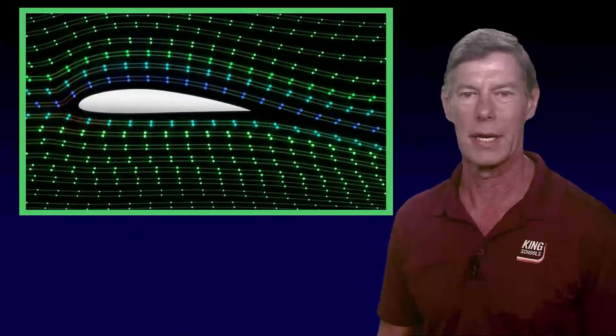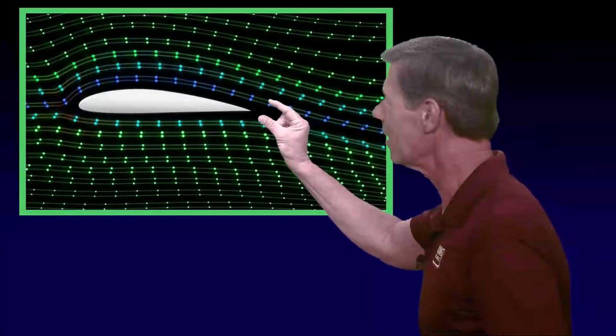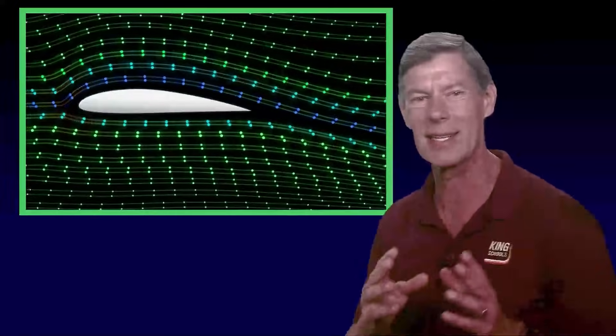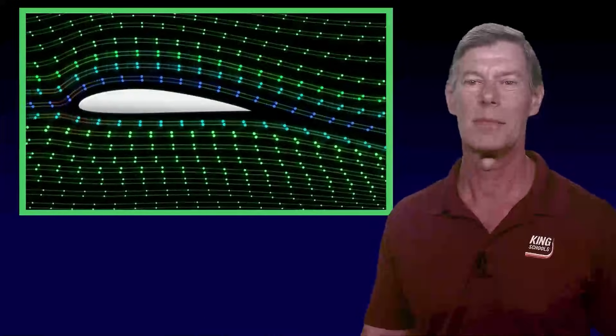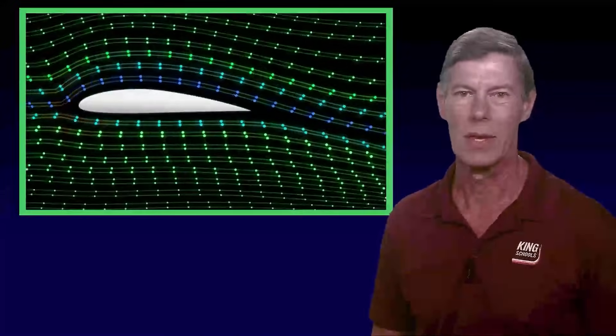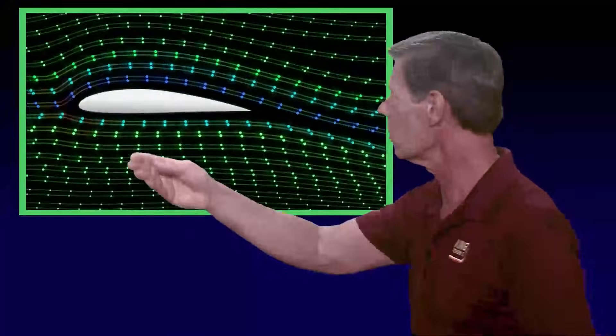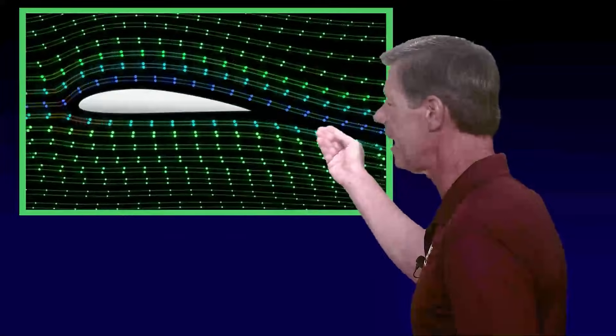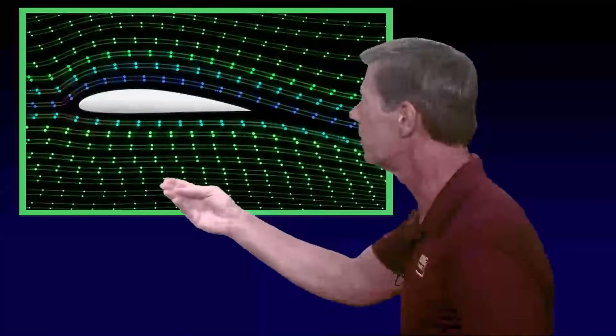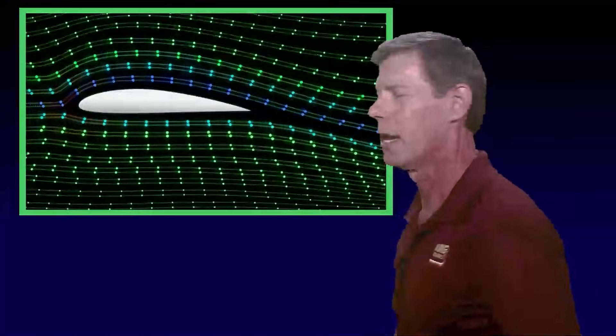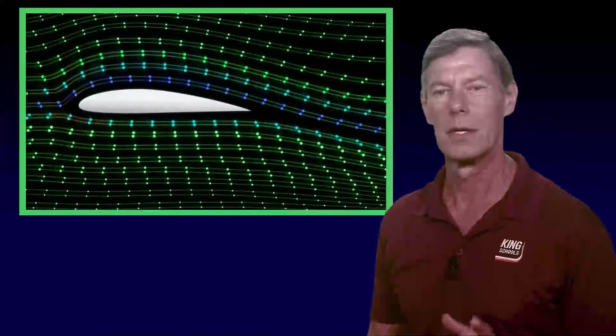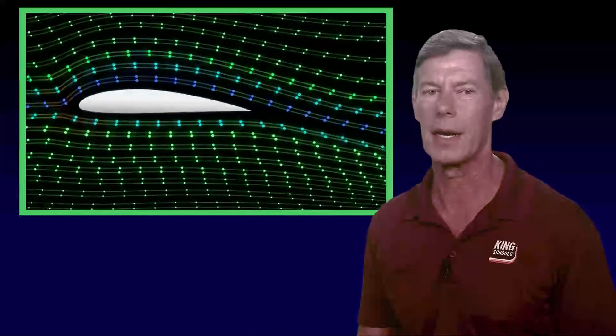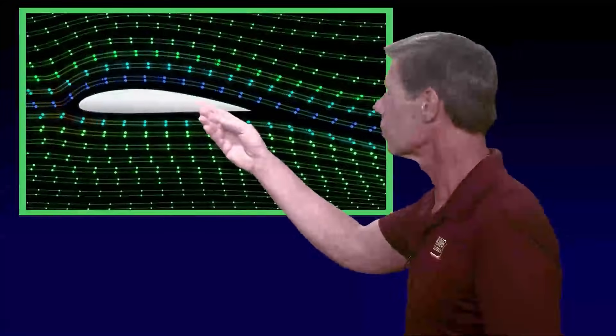Now there's a common myth that the air over the top of the wing and the air under the wing must somehow magically meet at the trailing edge at exactly the same time. While this might help to explain how lift is generated, it simply is not always true. What's more accurate to say is that the air over the top almost always moves faster and reaches the trailing edge before the air below the wing. While these pressure differences between the top and the bottom of the wing are important, you'll want to know that lift is more of a product of the angle of attack and air redirection.